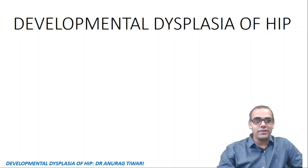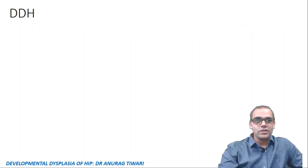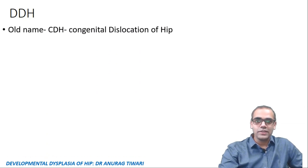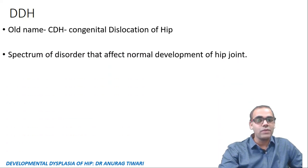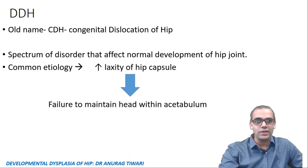Hello friends, myself Dr. Anurag Tiwari and today through this video I am going to teach you developmental dysplasia of hip joint. The older term was congenital dislocation of hip or CDH, but nowadays it has been replaced by DDH — developmental dysplasia of hip. Basically the problem is defective development of the hip joint, which includes all disorders affecting normal hip joint development, causing increased joint laxity. As a result, the head moves out of the acetabulum and there is failure to maintain reduction.